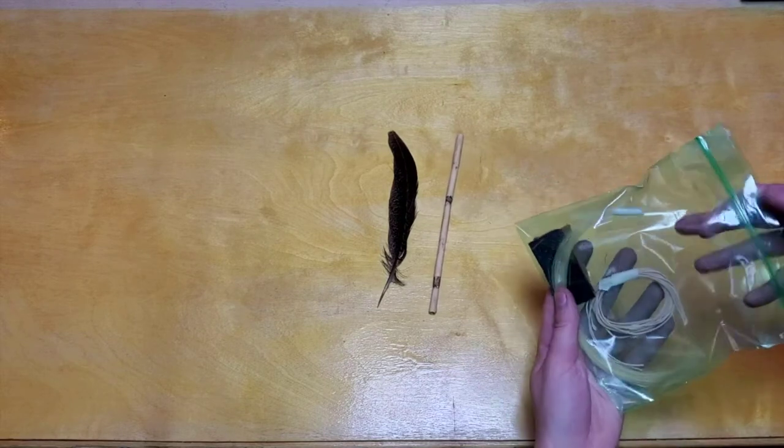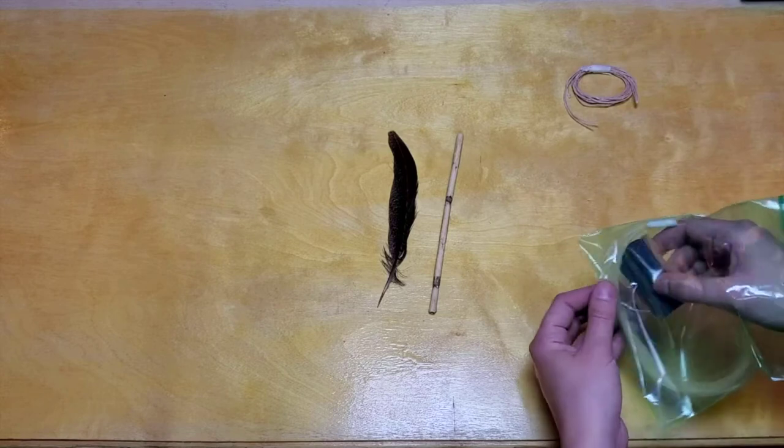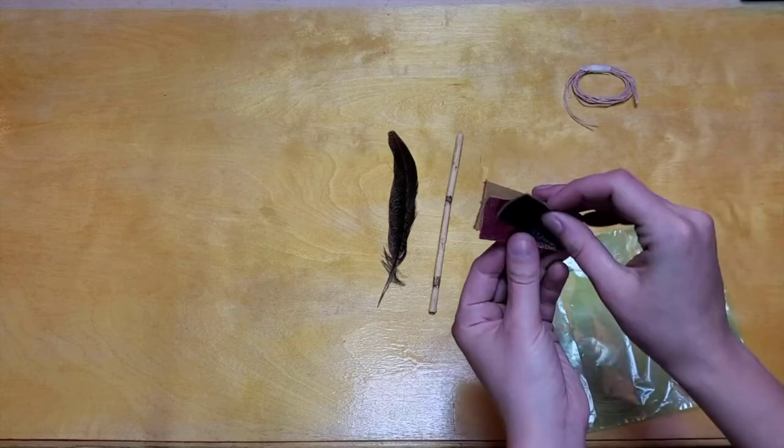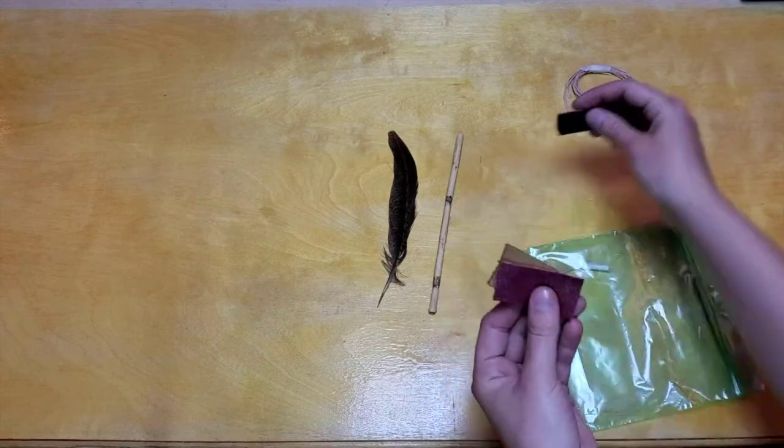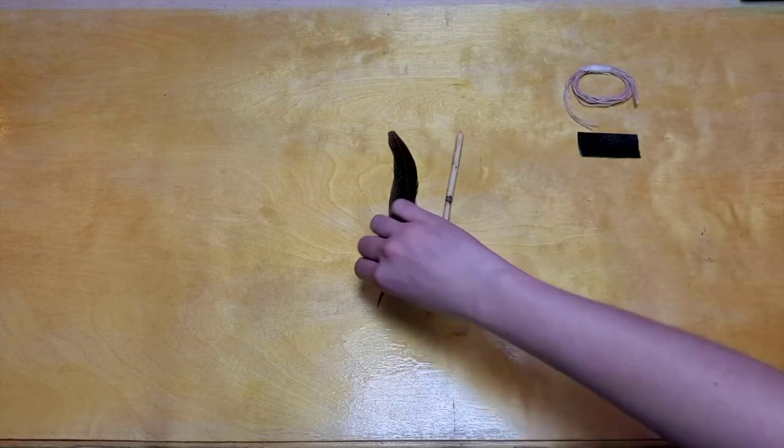You can also get out your materials to make your ferrule, which is what holds the bristles to the handle. So get out a piece of leather and that string. You have some extra material so you can make some more paintbrushes if you want.